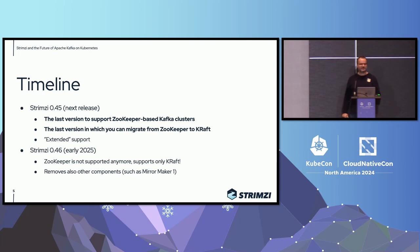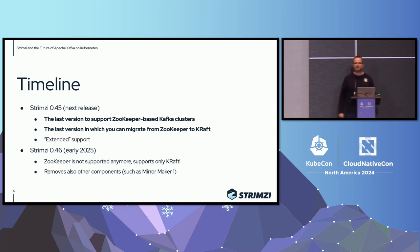Then in the next release, Strimzi 0.46, which we expect in early 2025, there won't be Zookeeper support at all anymore, and it will be KRaft only. There are some other things being removed as part of Kafka 4.0 as well, such as MirrorMaker 1 or support for older Java versions. So if you are already using Strimzi, please keep this in mind because these timelines are really important.